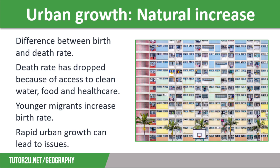The second reason for urban growth is natural increase. If the birth rate in a town or city is higher than the death rate, then the population will increase. The death rate has dropped in urban areas around the world due to residents having access to a varied diet, better access to clean water and sanitation systems, and more access to healthcare facilities. There is a marked difference in quality of life between urban and rural areas in NEEs and LICs. Additionally, many of the people who move from rural areas to urban areas are young adults, so will often go on to have children, which pushes the birth rate up. Rapid urban growth means that millions of people across the globe live in blocks like the one on the screen, or in informal settlements, which we will cover in another video.